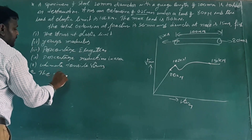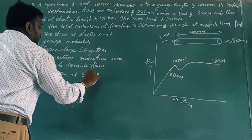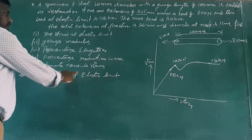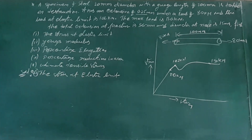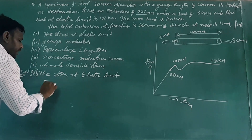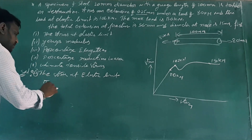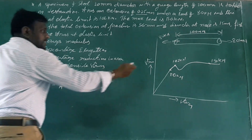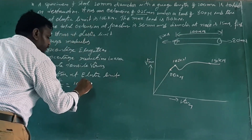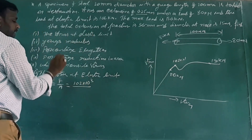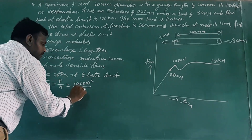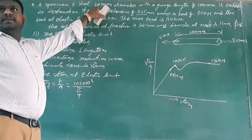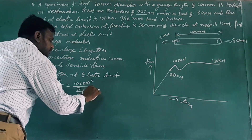The stress at the elastic limit, sigma_y, is equal to force per unit area. The force at the elastic limit is 102 kilonewtons, which is 102 × 10³. The area is pi by 4 times 20 squared. This gives the yield stress sigma_y.